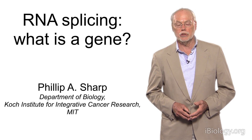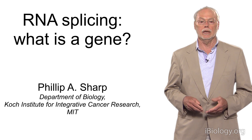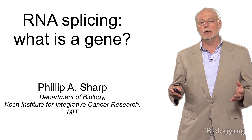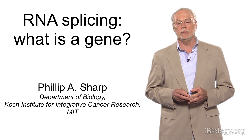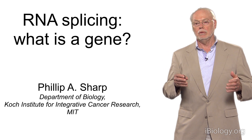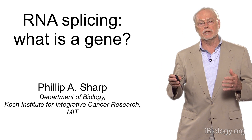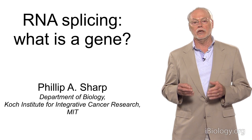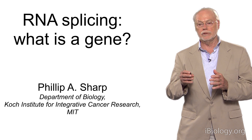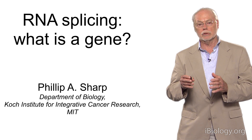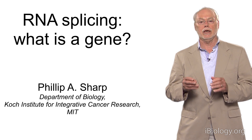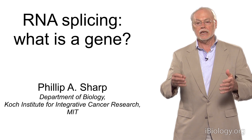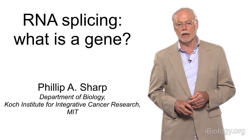I'm Philip Sharp, institute professor at MIT in the Koch Institute for Integrated Cancer Research. I want to talk about RNA splicing and the discovery of split genes, but I want to set it in the context of the question of what is a gene, because we use the word gene when we talk to each other, but when we start thinking about it in the context of specific biochemical structure, genes are very complicated, and we find it very difficult to define a gene, and this can be quite important in terms of understanding biology.